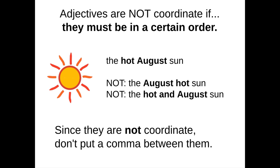Now, adjectives are not coordinate if they must be in a certain order, because that's probably telling you one adjective either takes priority or is more important than the other. For instance, 'the hot August sun beat down on me.' Hot and August are describing the sun. I would not switch the order and say 'the August hot sun.' I would not say 'the hot and August sun,' because those adjectives are not describing the sun equally. August is the more important adjective technically. They are not coordinate, so I do not put a comma between them. No comma.